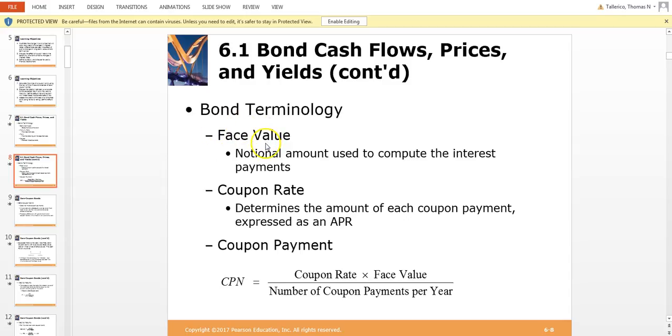And again, coupon rate is another term for the interest rate, expressed as an annual percentage rate of each coupon payment. So to determine the payment for each coupon, you simply take the rate times the face value.